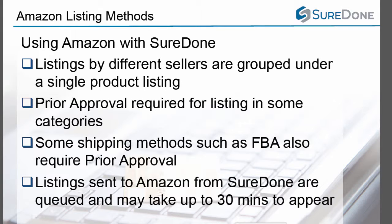If you've been working a lot with eBay or you're new to Amazon, we just want to remind you that your items do not immediately get posted on Amazon, but are queued for listing and may take up to 30 minutes in some cases to appear.